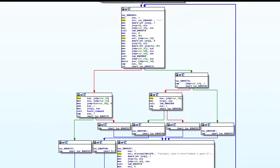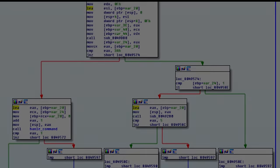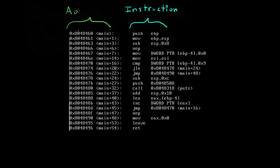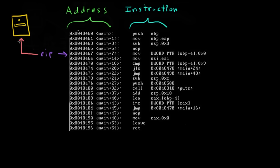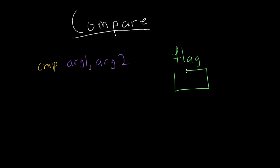Let's get into the control flow of an executable. This is where all of the if statements and loops in your code come together to determine the order in which instructions are executed. Every instruction has an instruction address — the area in memory where the instruction is stored. The EIP register, also known as the instruction pointer, always contains the address of the instruction that is currently being executed. The computer will execute whatever the instruction pointer is pointing to, and then the instruction pointer will move to the next instruction. The CMP instruction is equivalent to the SUB instruction, except instead of storing the result into the first argument, it sets a flag in the processor that contains the value 0, greater than 0, or less than 0. For example, CMP 1, 3 would subtract 3 from 1, and since negative 2 is less than 0, the flag would be set accordingly.